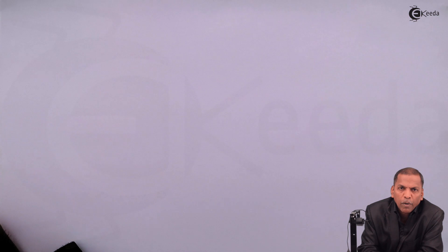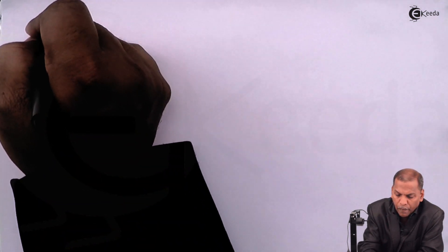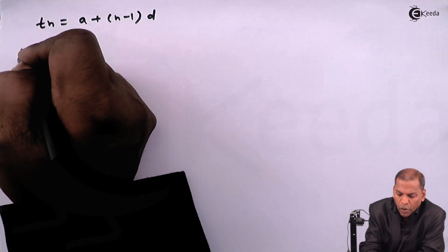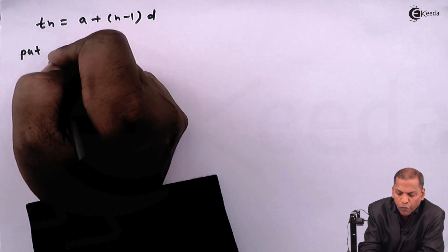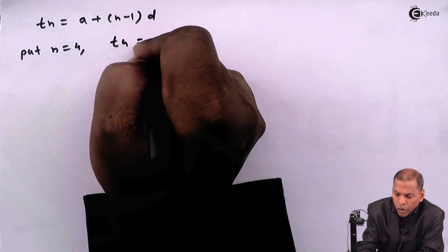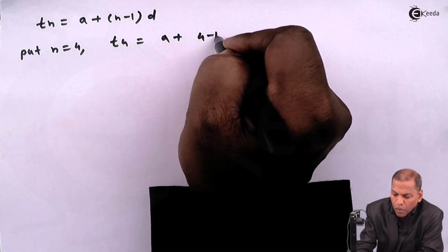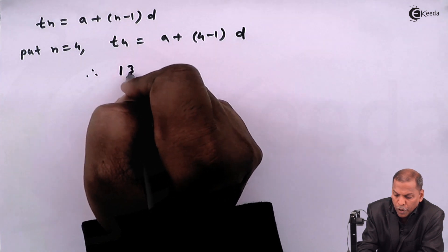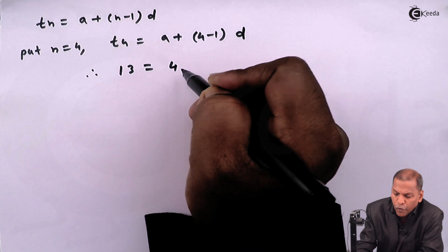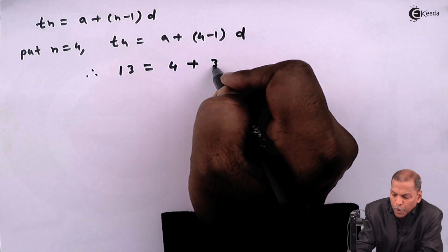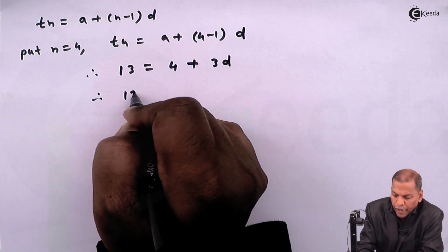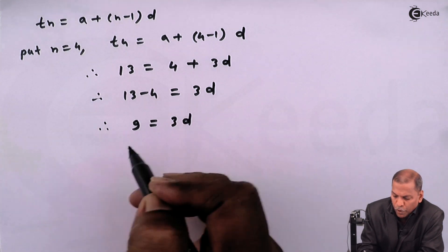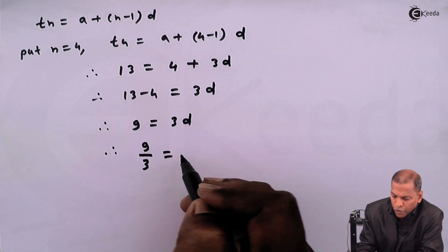Now we write the formula for the nth term of AP. We have t4 equal to a plus (4 minus 1) multiplied by d. Now t4 is equal to 30. Substituting: 30 equals 4 plus 3d. On simplifying, 30 minus 4 equals 3d, therefore 26 equals 3d, giving us the value of d.